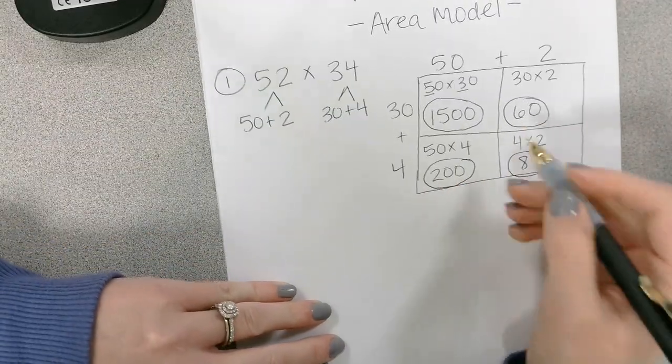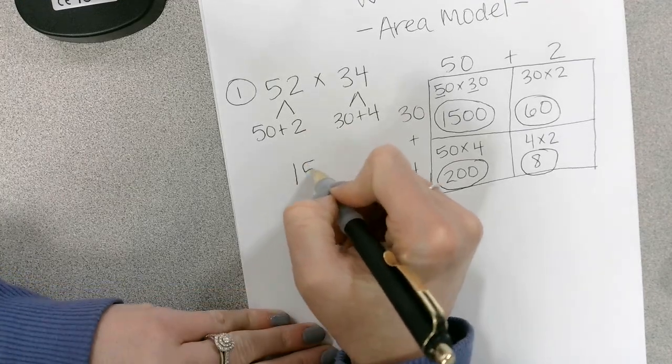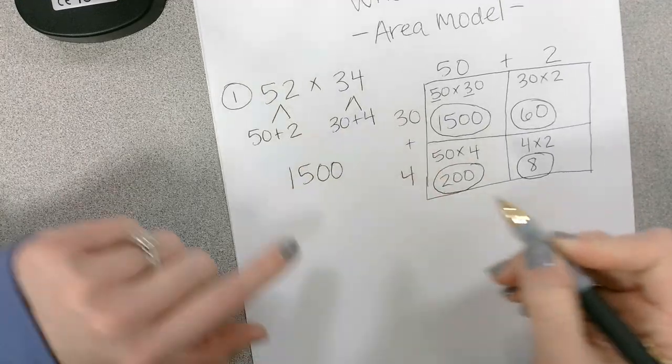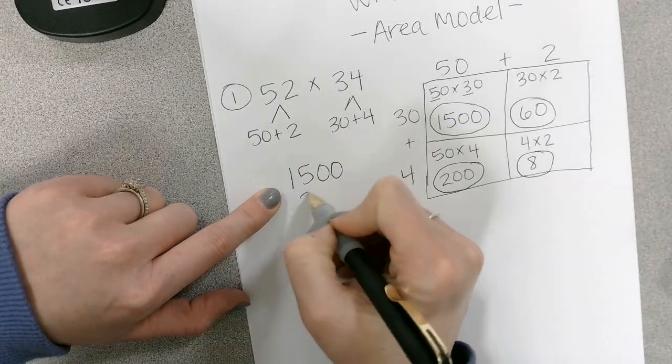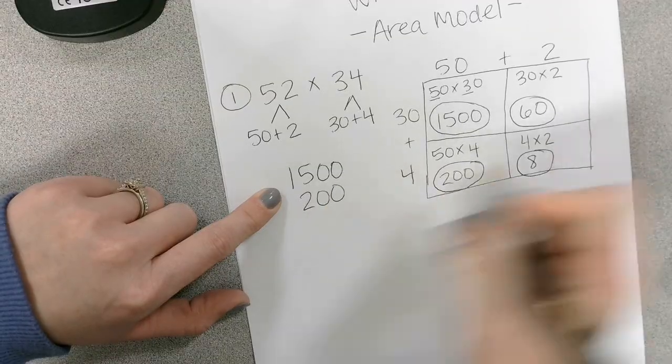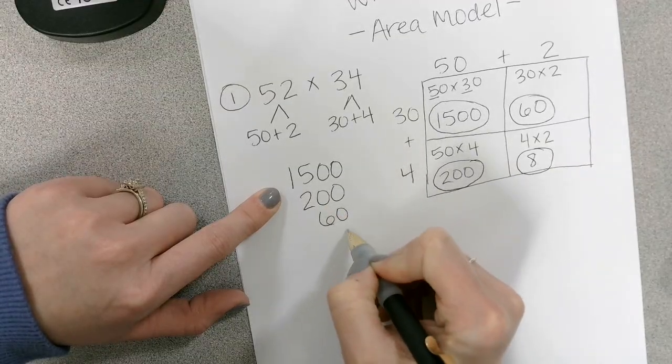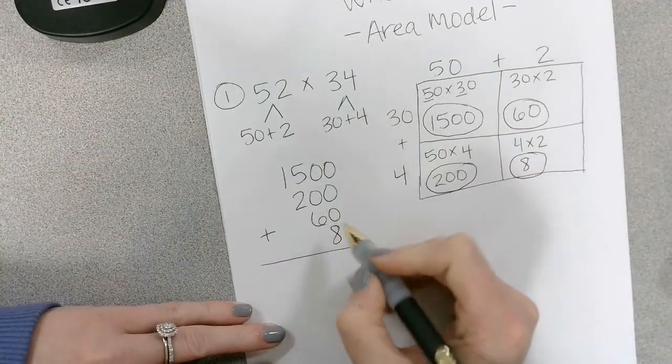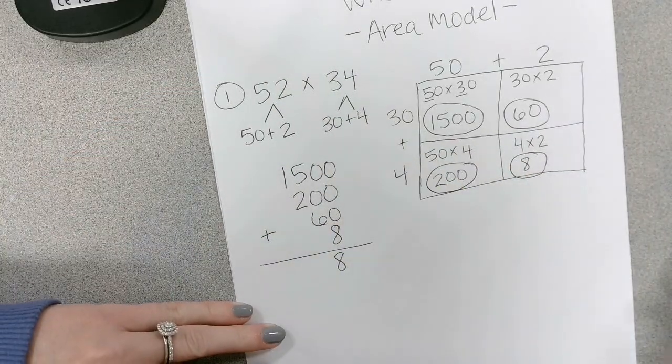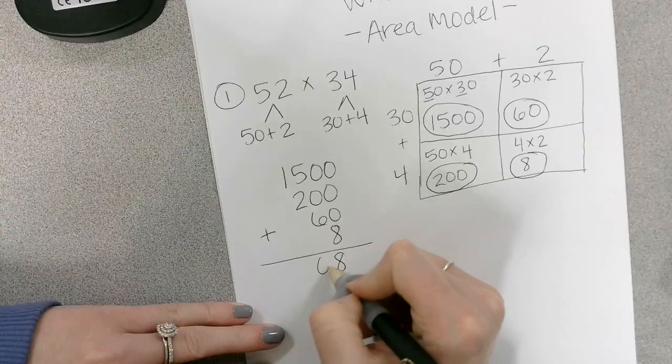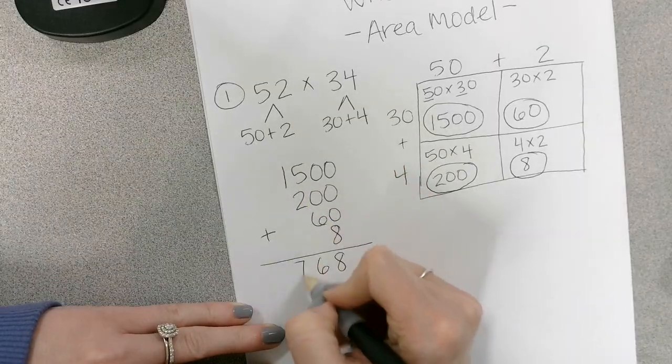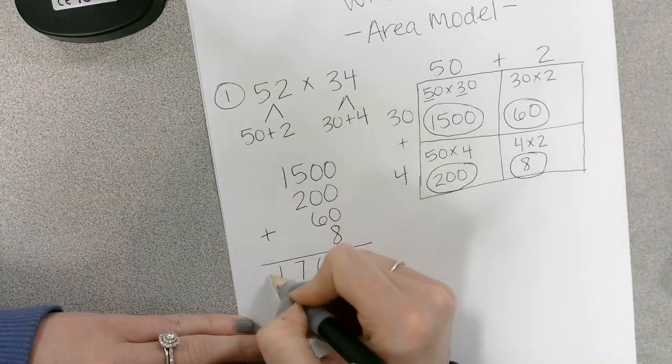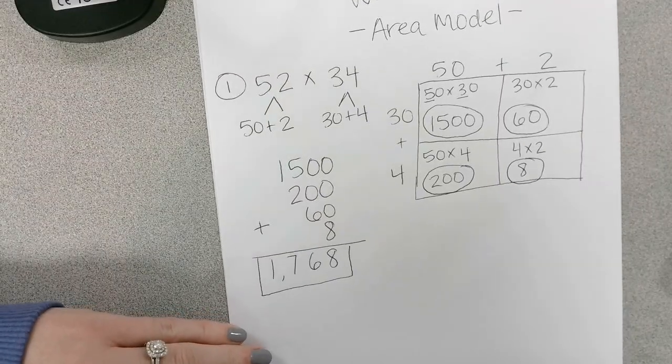Then we just take all four of those and we add them up. Line them up according to place value. 1,500, 200, 60, and 8. When we add those up, I have an 8 in the ones place, a 6 in the tens place. 5 plus 2 is 7. I drop that one. So my answer is 1,768.